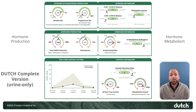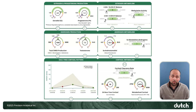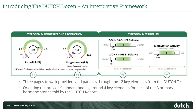This particular example happens to be a Dutch Plus with salivary cortisol. If it happens to be a Dutch Complete, it's the exact same layout, except we're exchanging the salivary-free cortisol up-and-down pattern for the diurnal cortisol pattern in urine in the lower left. Because we've brought these 12 key elements forward — elements you used to have to flip through four or five pages to understand — we're able to build an interpretive framework around this. We're calling this the Dutch Dozen, and we'll walk you through them one page at a time across the three sections.